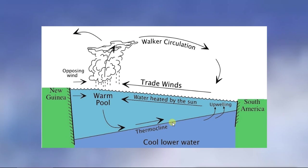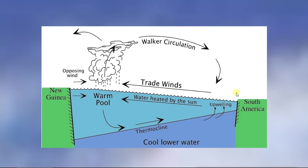So, El Niño and La Niña — how does this relate to low and high pressure? This diagram shows the Pacific Ocean. Here we have New Guinea, which is off the coast of Australia, and over here is the coast of South America. Normally, the trade winds in the tropics blow across the Pacific Ocean. When they do this, the trade winds move water out of this area, and since water moves, it leaves a gap that is immediately filled with water coming in from below. Because of the trade winds, we get this circulation pattern of water moving in the ocean.